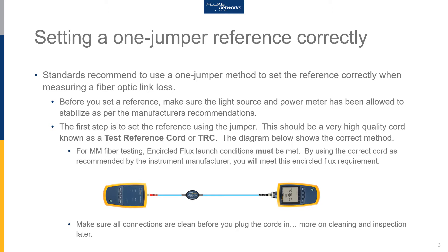Before attempting any fiber loss measurements, you need a correct reference — it's the most critical part of making the measurement. First step, and very important, you need to let the light source and power meter stabilize as per the manufacturer's recommendations. Not allowing instruments to stabilize is the biggest source of errors in loss measurements.